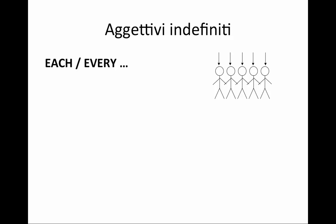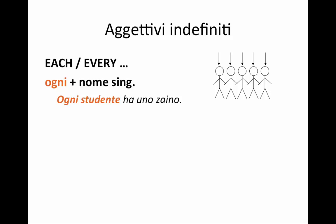This illustration indicates each or every of something, and that's an adjective. I'm going to use ogni with a noun in singular after it. For example, 'ogni studente ha uno zaino' — every student or each student. 'In ogni aula ci sono molti studenti.' Just remember that after ogni, the noun that follows has to be in singular. So that's each or every.